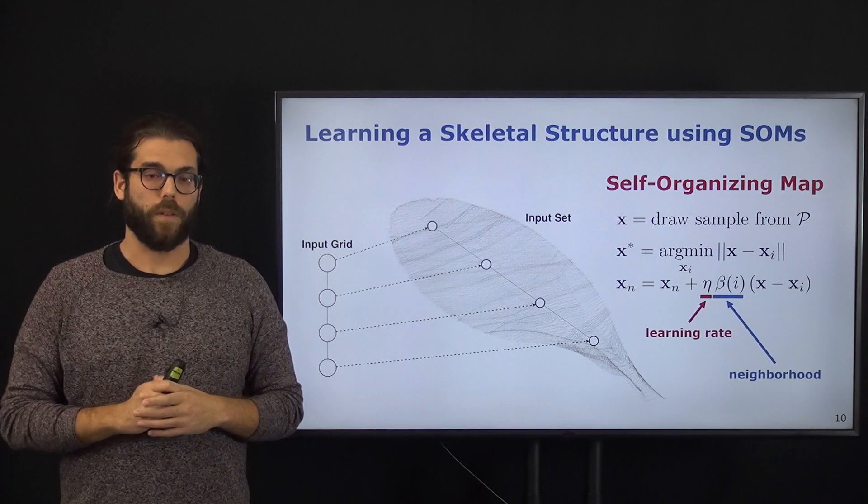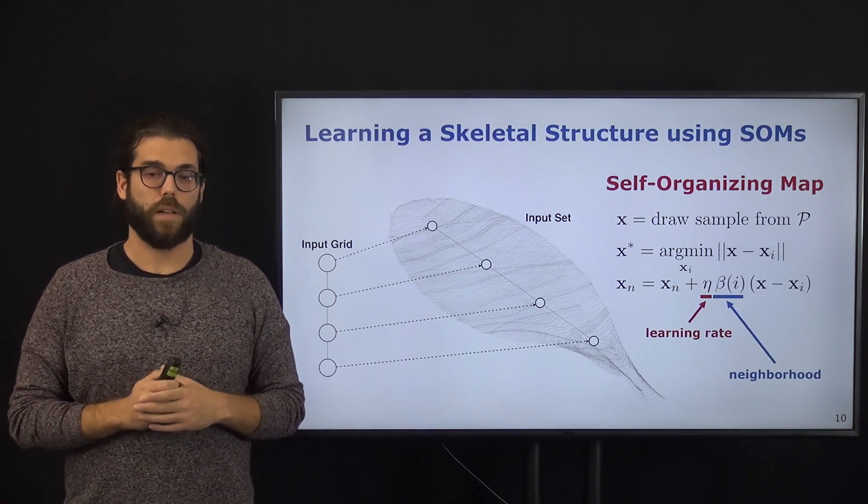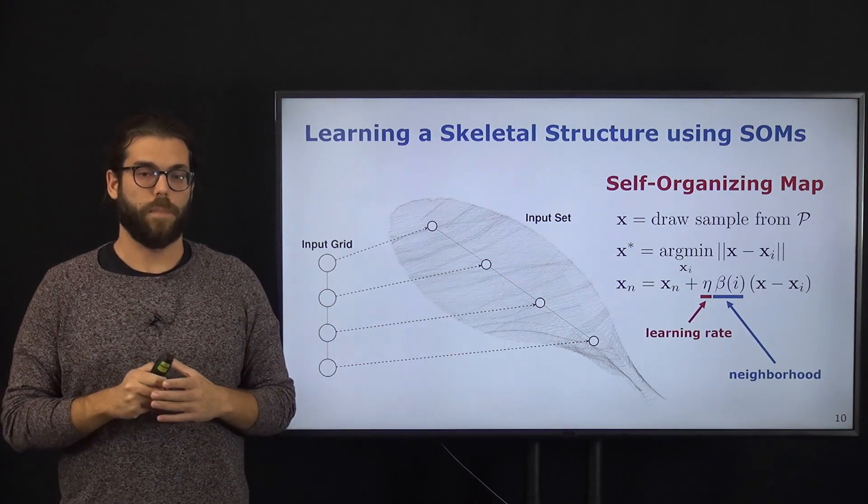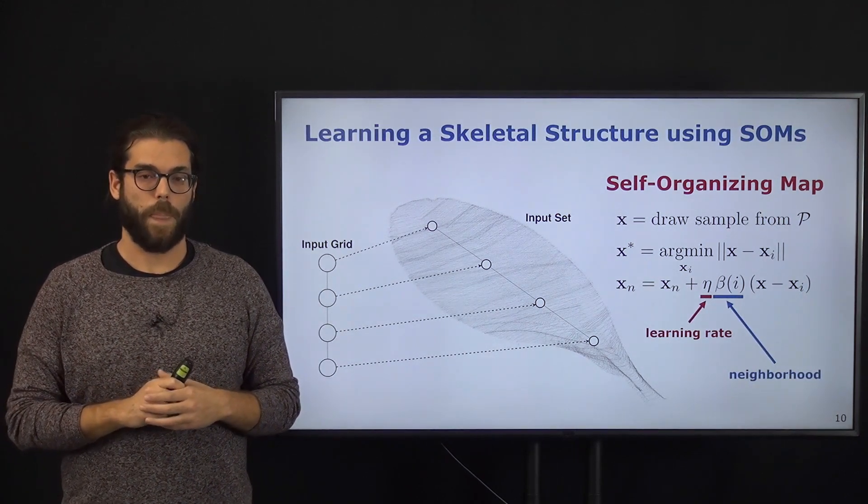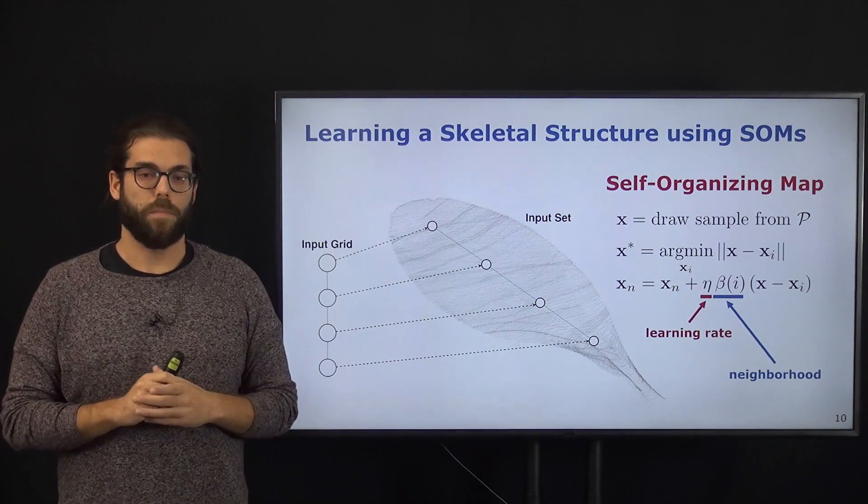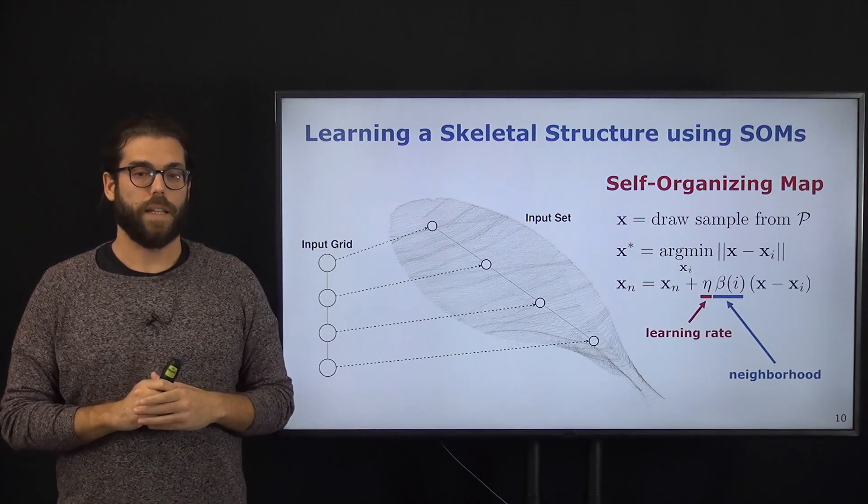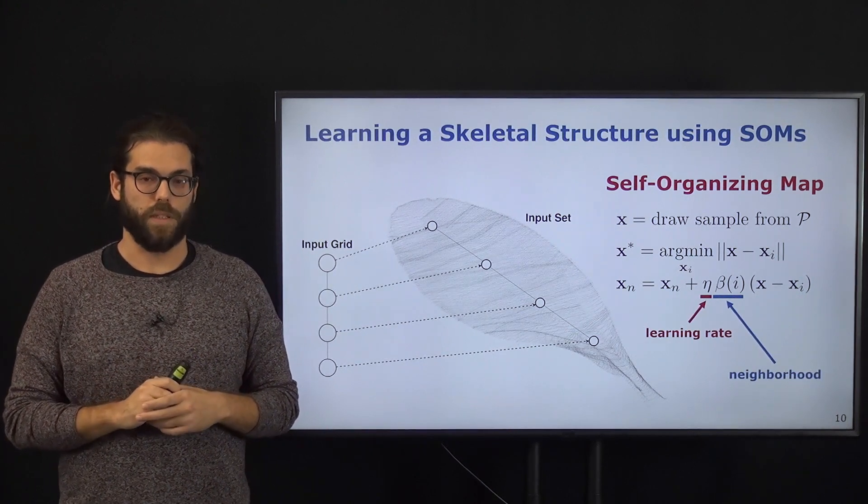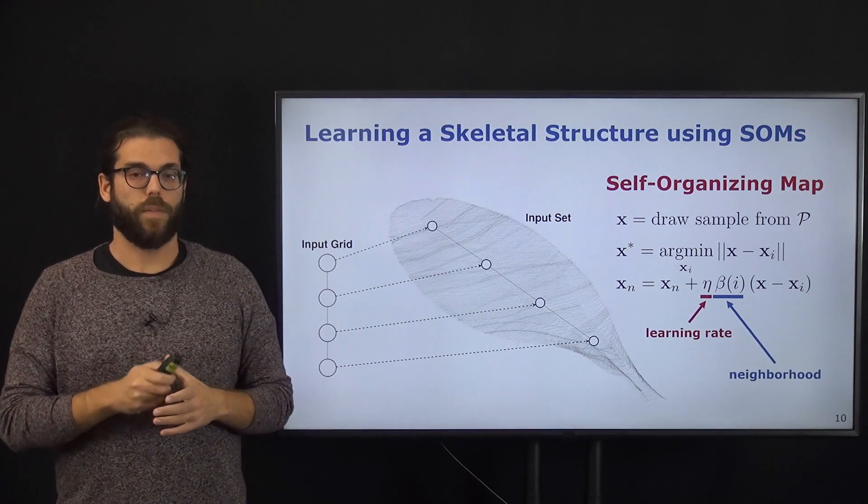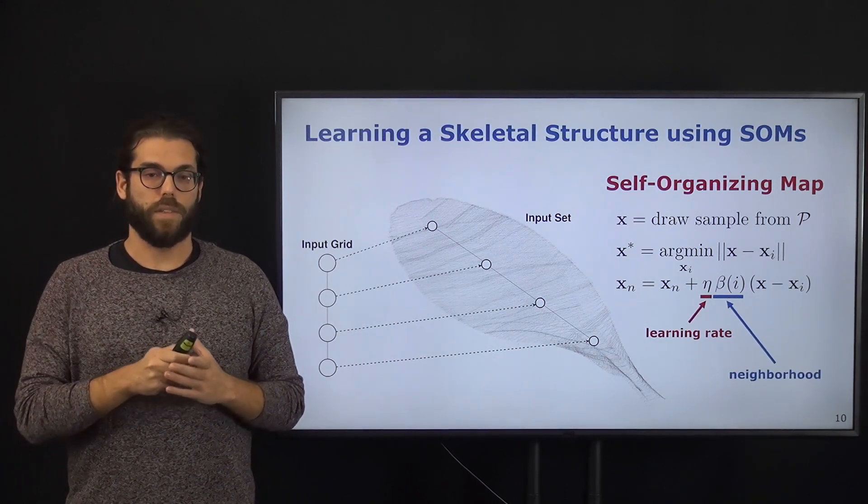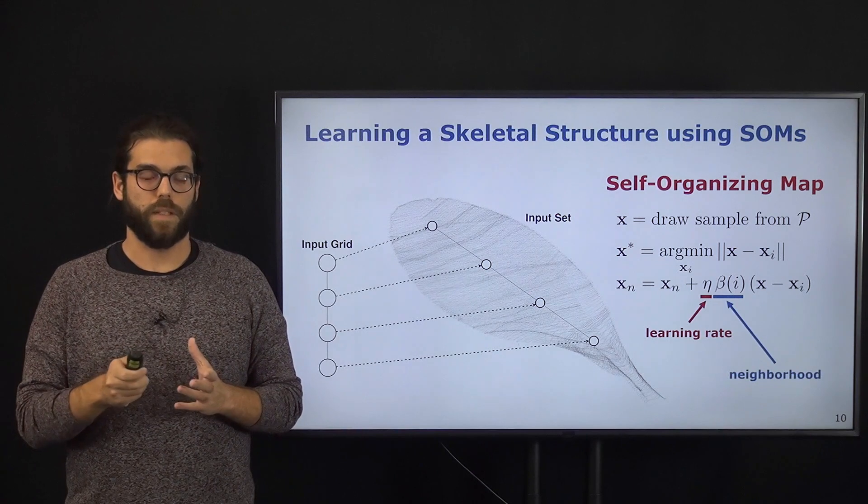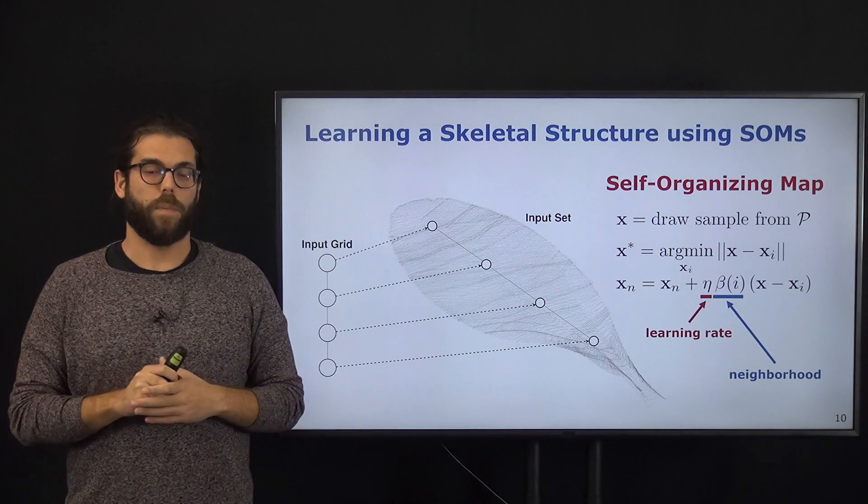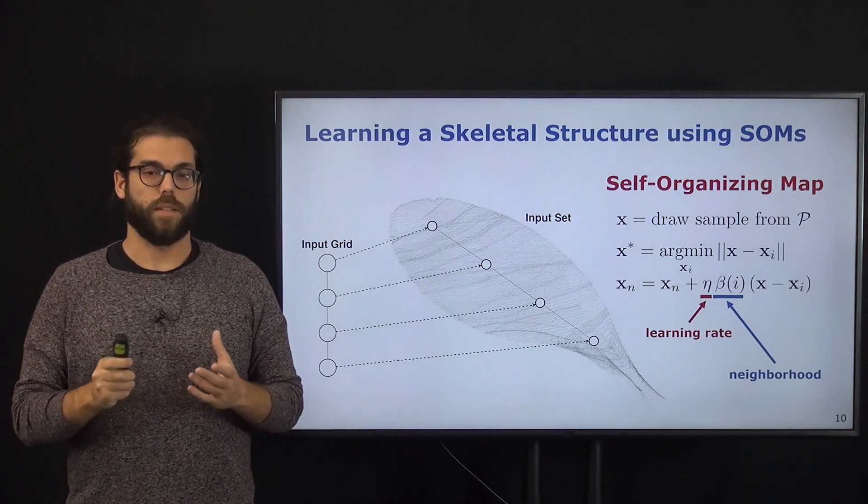At each iteration, the first step is to draw a random sample from the input point cloud, and then we find the closest point in our input map. This closest point is called the best matching unit, and is then used to update the weights of all the other nodes in the input grid. Basically, we update the coordinates of the best matching unit to be as close as possible to our random sample, and then we move all the other points in the grid accordingly to the distance to the best matching unit.